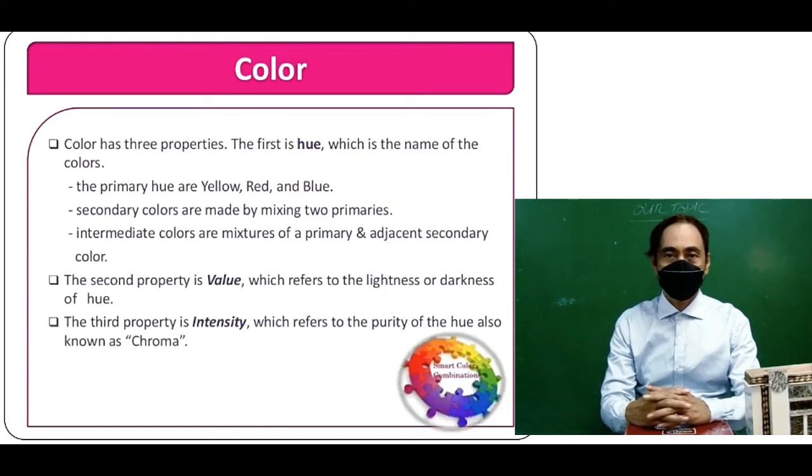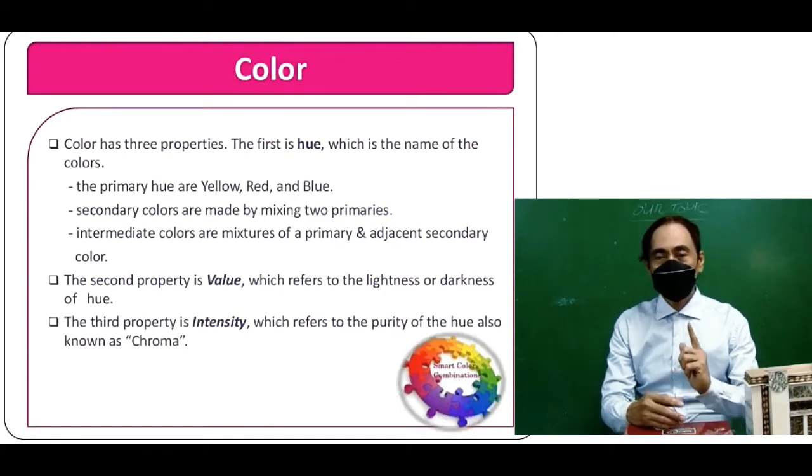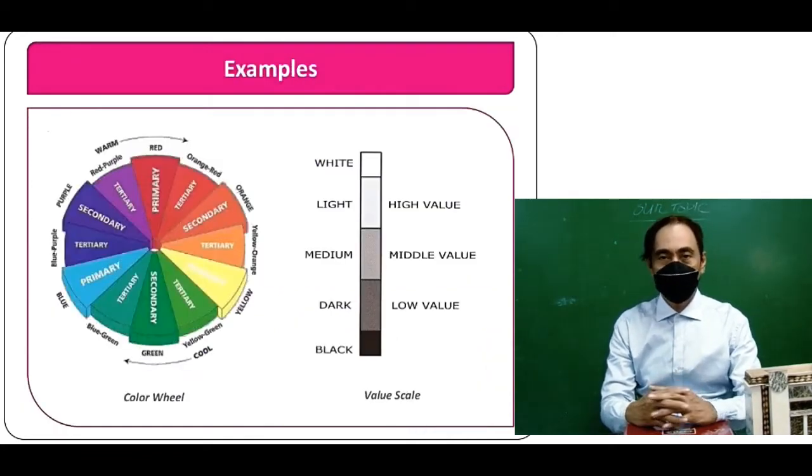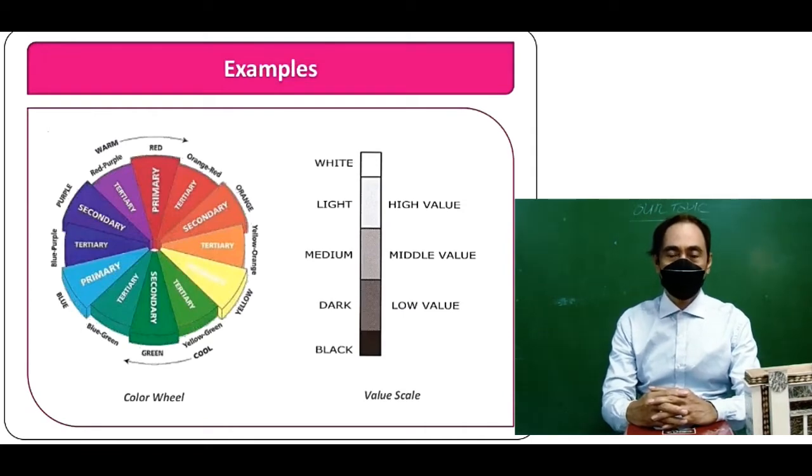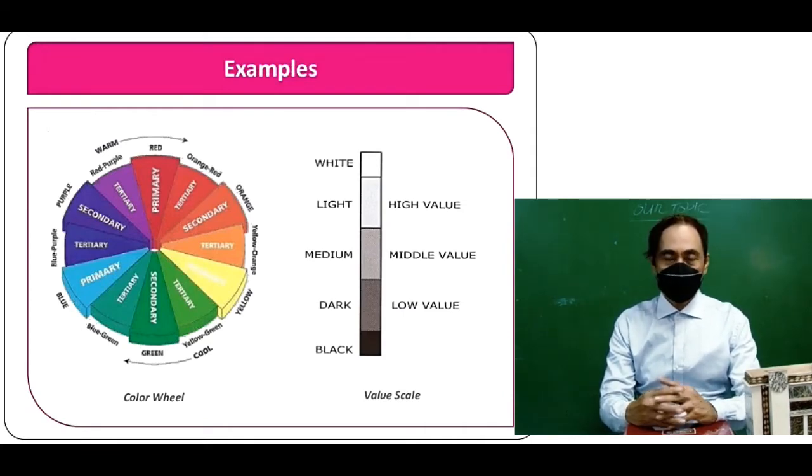The third property is intensity, which refers to the purity of a hue, also known as chroma. An example is the color wheel. In the color wheel, there must be values of each color.